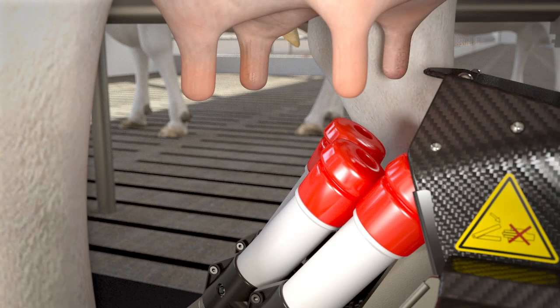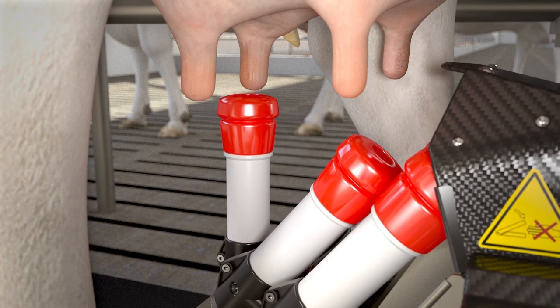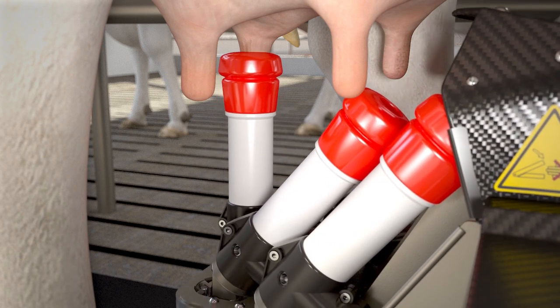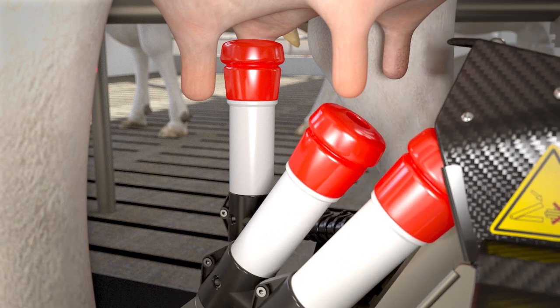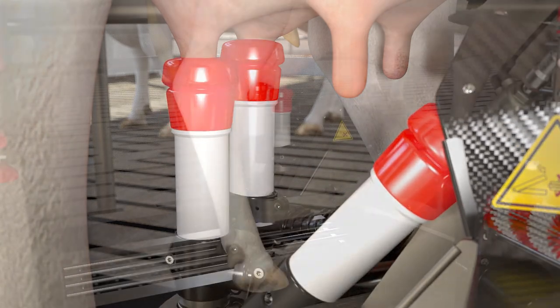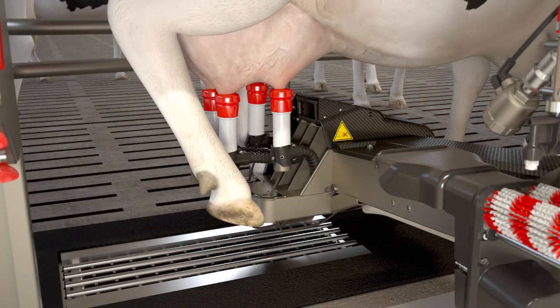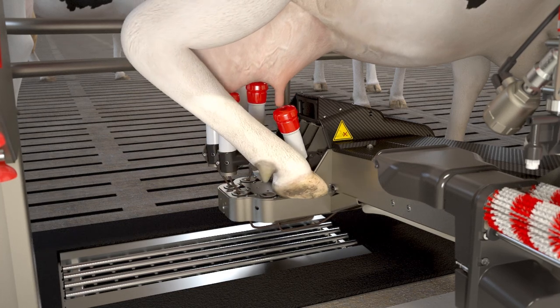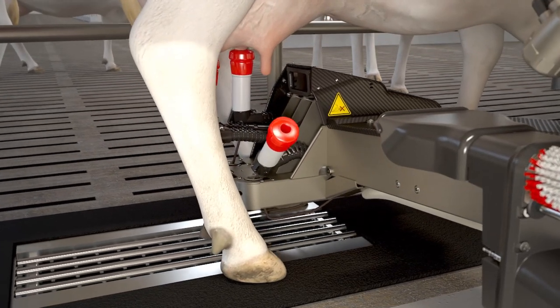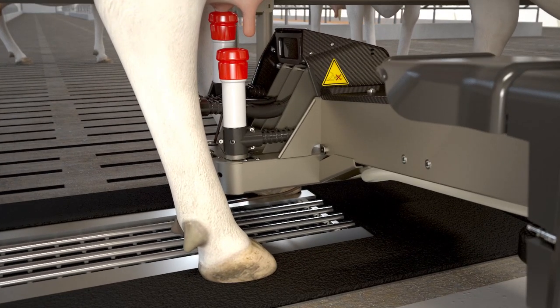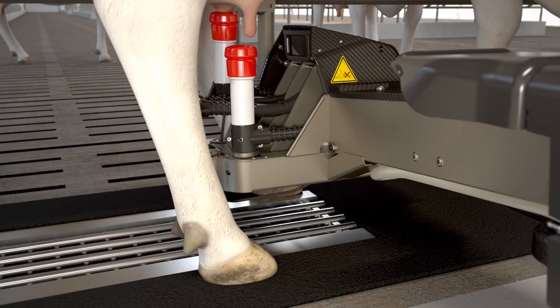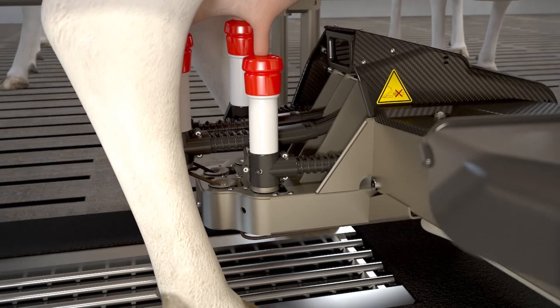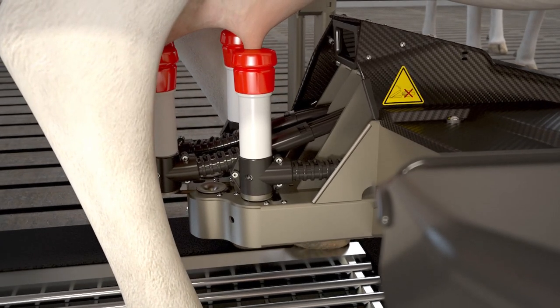The slowest quarter is connected first. The chance of a teat cup being trodden on and popped off is minimal thanks to the lightweight teat cups and short tubes. Should this happen, the teat cup never falls to the ground. It is simply reconnected. The airflow is continuously monitored. If a teat cup pops off, it is immediately disconnected to prevent it from suctioning any dirt.